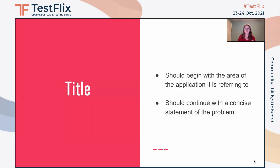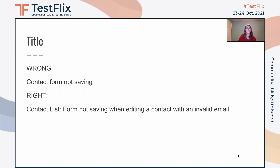So we begin with the title. The title should begin with the area of the application it is referring to. This makes it very helpful to refer back to later if you can easily sort by the area of the application. It should then continue with a concise statement of the problem. So here's a title that's not so great: 'Contact form not saving.' There's a lot that's missing here — we're missing the application area and also some key details. A better way would be: 'Contact list: form not saving when editing a contact with an invalid email.' There's enough detail that it will be a lot easier for people to go back and find this bug if they need to later.